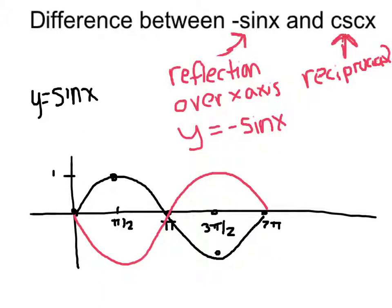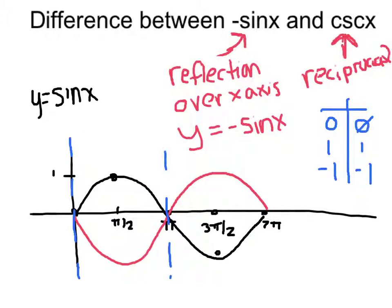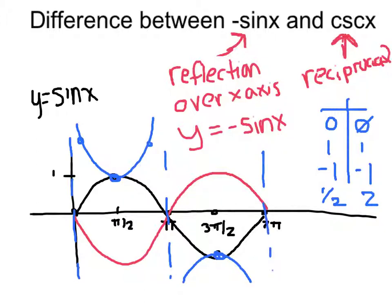That's a completely different thing than the cosecant graph. The cosecant graph is the reciprocal. If I take 0 and find the reciprocal, that's undefined — so wherever the sine graph is 0, the cosecant is undefined. If I take 1 or negative 1 and flip them over, they stay the same: 1 becomes 1 and negative 1 becomes negative 1. If the sine is 1/2, the cosecant becomes 2 — so at 30 degrees where sine is 1/2, cosecant is 2. The cosecant graph is the reciprocal sine graph. You need to know the difference: if the amplitude is negative, it reflects over the axis, but the reciprocal function — cosecant — is completely different.